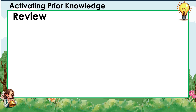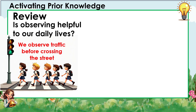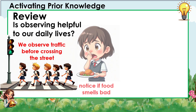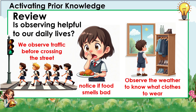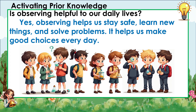Review: Is observing helpful to our daily lives? Yes! Examples are: we observe traffic and people crossing the street, notice if food smells bad, or observe the weather to know what clothes to wear. Observing helps us stay safe, learn new things, and solve problems. It helps us make good choices every day.